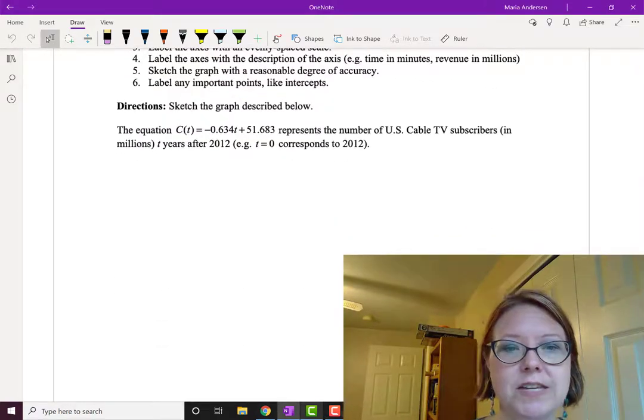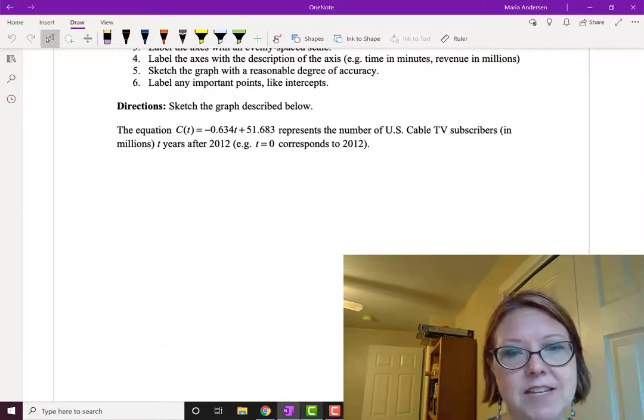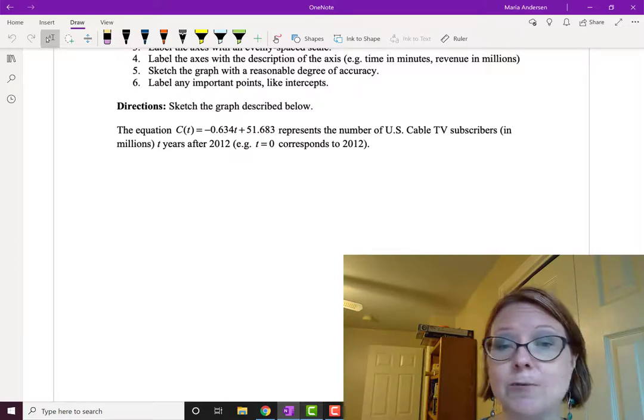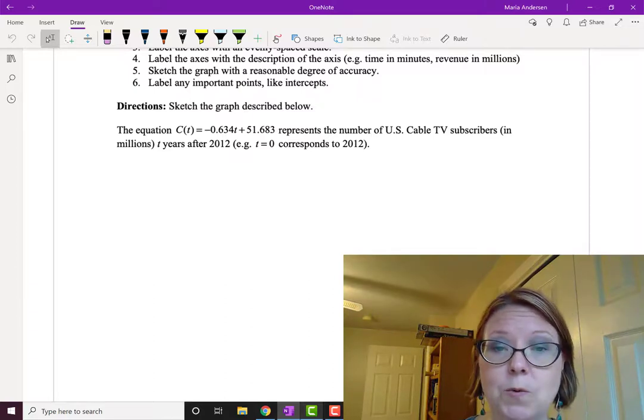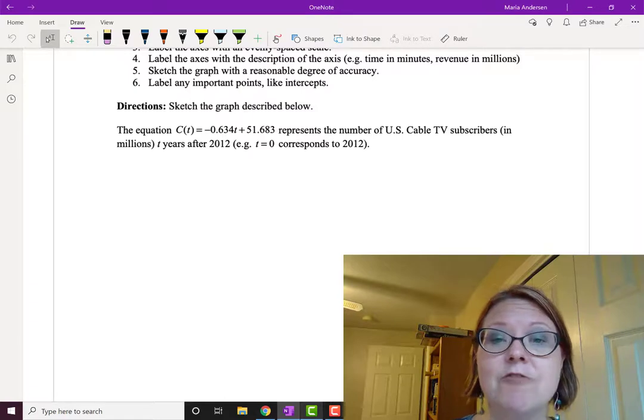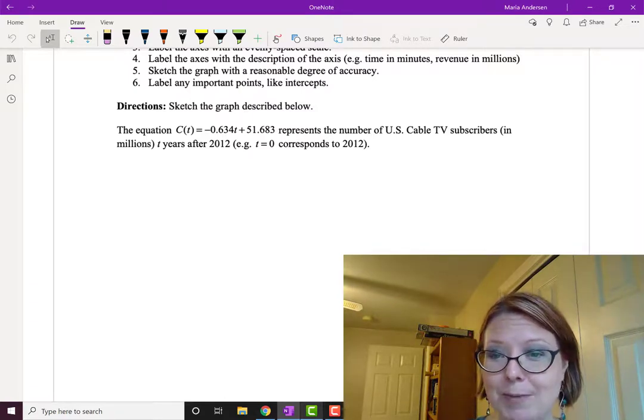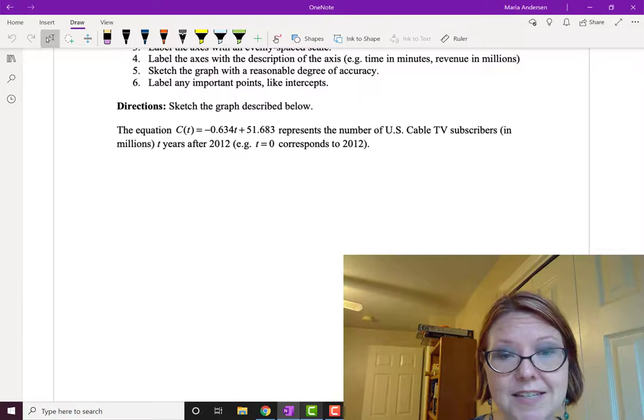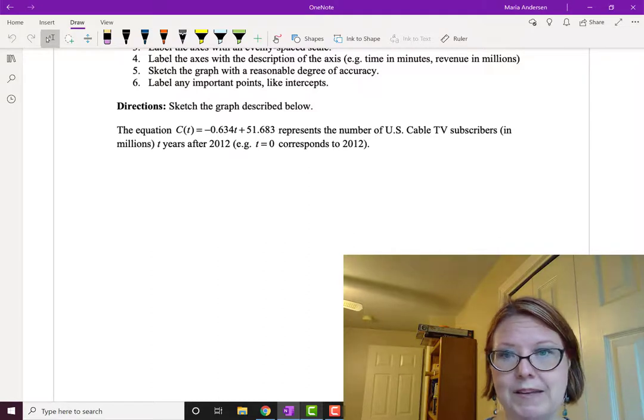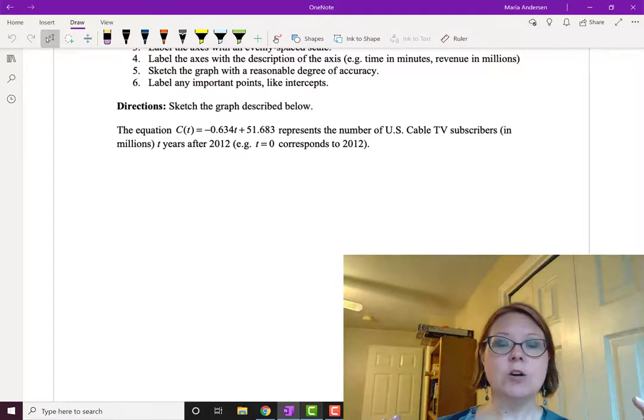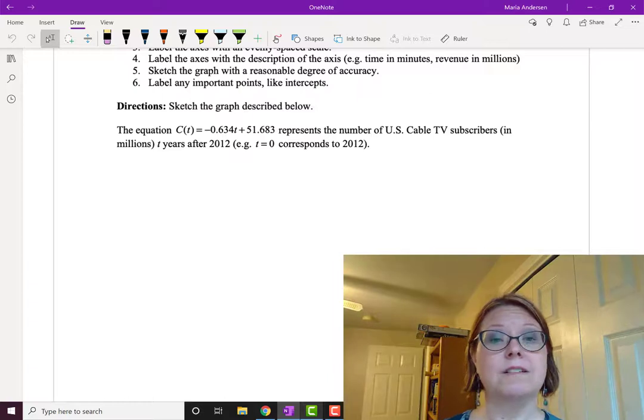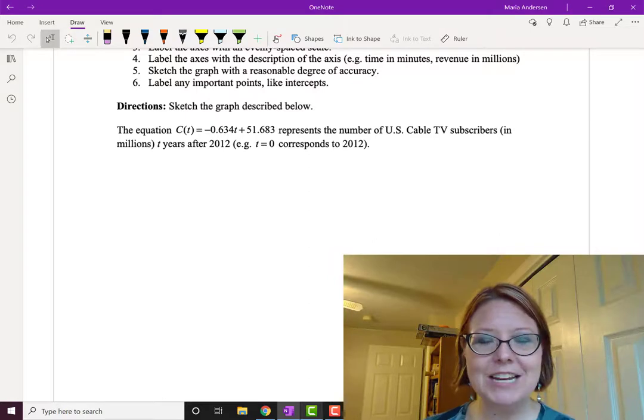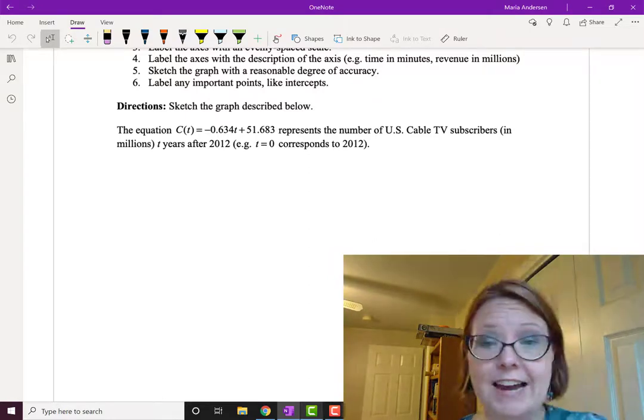The example we're going to use is the equation C(t) = -0.634t + 51.683, which represents the number of U.S. cable TV subscribers in millions t years after 2012. For example, t = 0 corresponds to 2012. You might hear that and think this is too much, but we can go through it in a very methodical fashion and make sure we're getting an accurate graph.